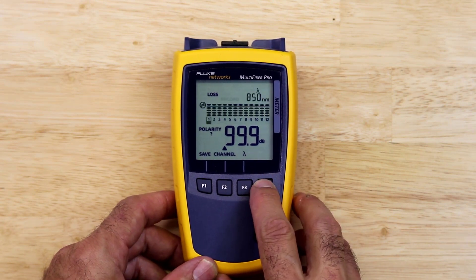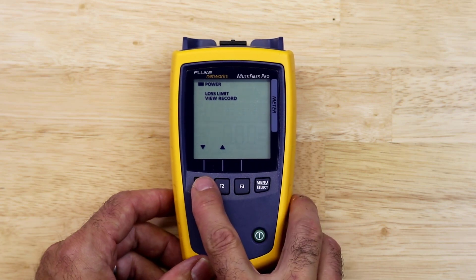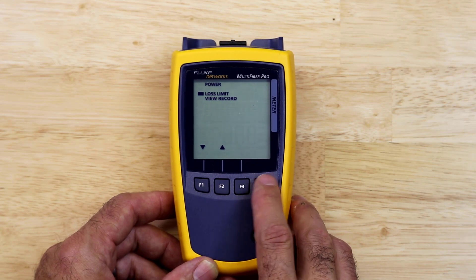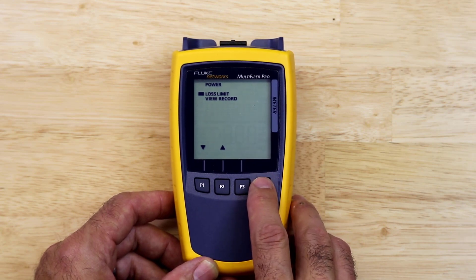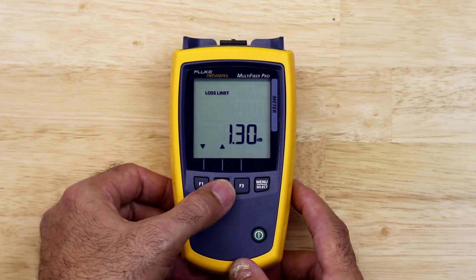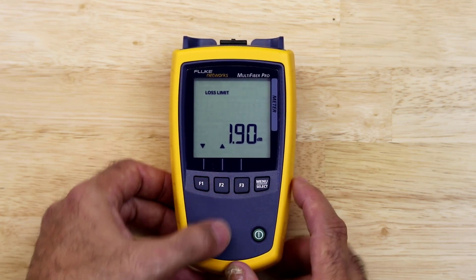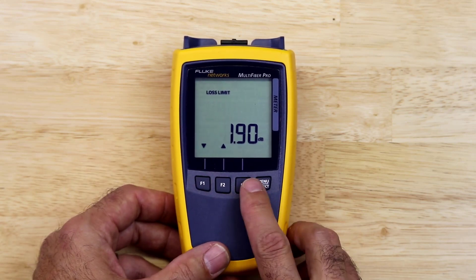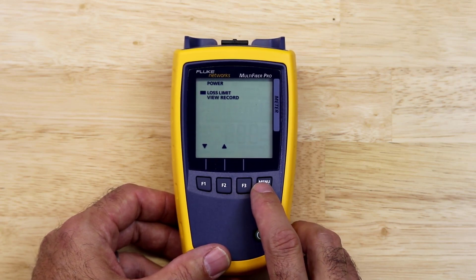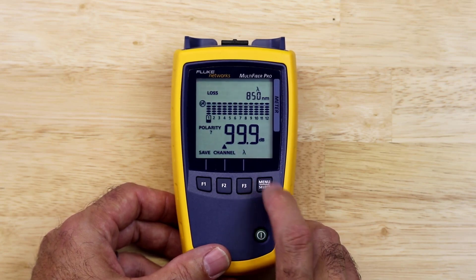I'm going to press the Menu Select button for 3 seconds. That will bring up a menu where I can enter the loss limit. I will hit the F1 key once to go to the loss limit. Then I'll press the Menu Select to go to the loss limit screen. Now I'll use the F1 and F2 buttons to change the loss limit to the value I looked up in the limit lines. In this case, I'll set it to 1.9 dB. I'll press the Menu Select to save the limit. I'll then press the Menu Select for 3 seconds to go back to the main screen.